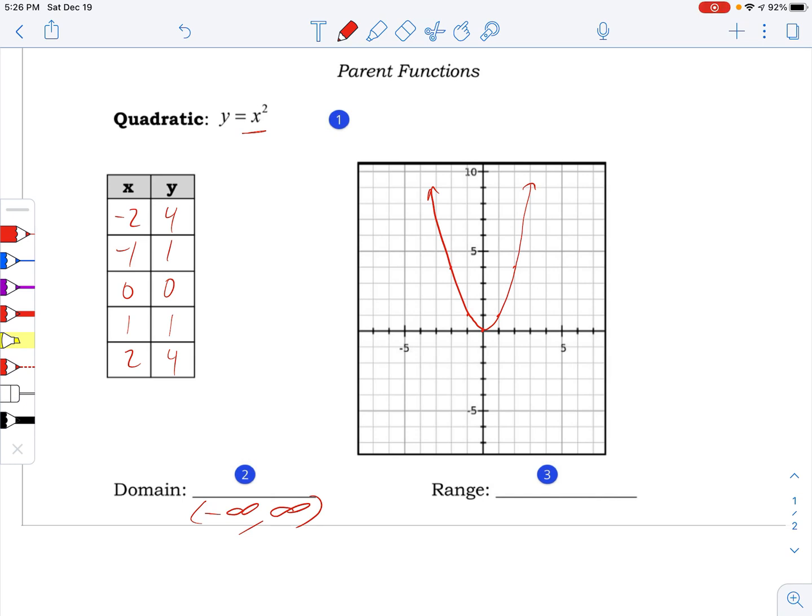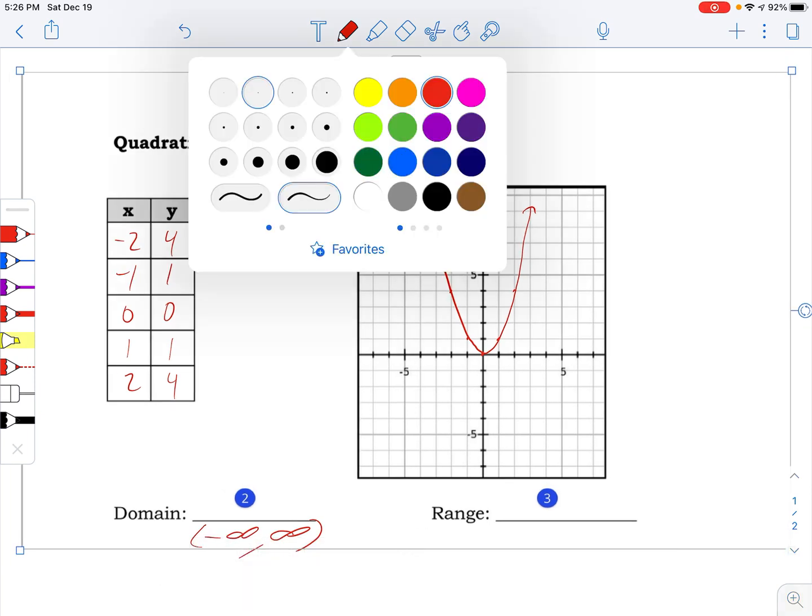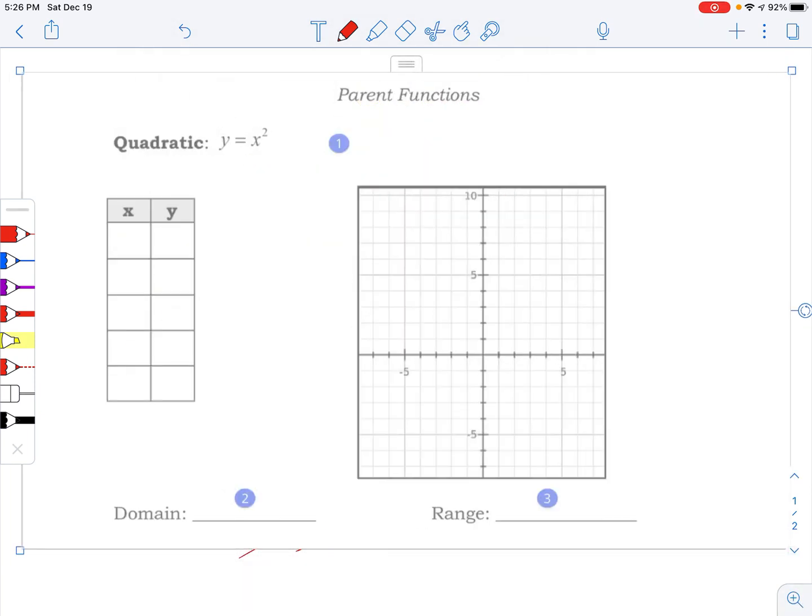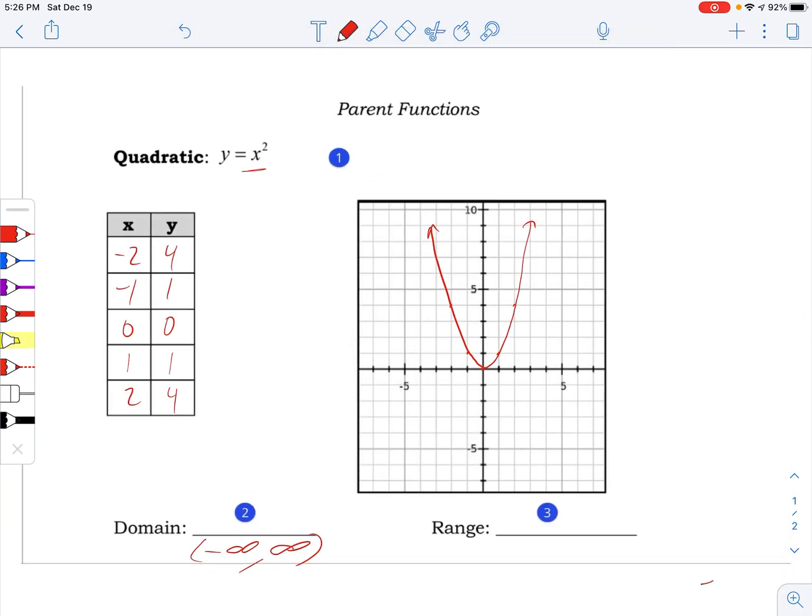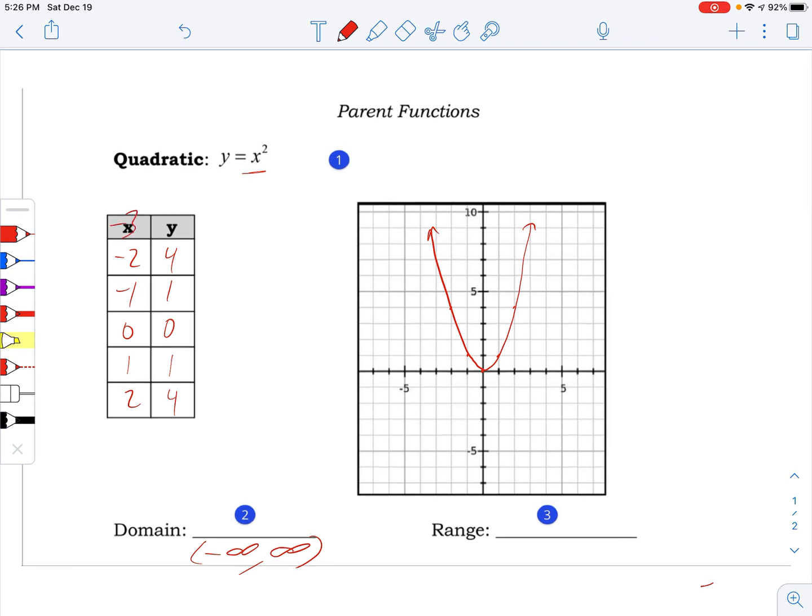Remember the range is the possible outputs or the possible y values. And notice in this table, even if I kept going, if I had negative three for x, I'd write nine, and negative four for x.